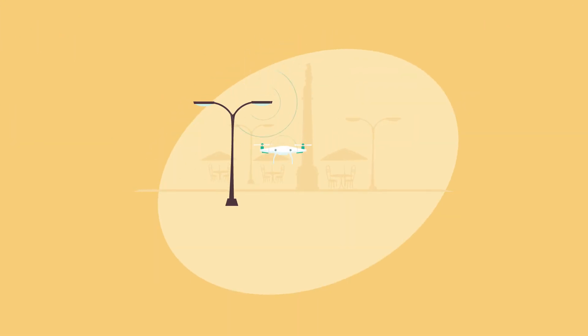Drones will use the lighting system as a navigator and they will bring us coffee or even play with our kids.